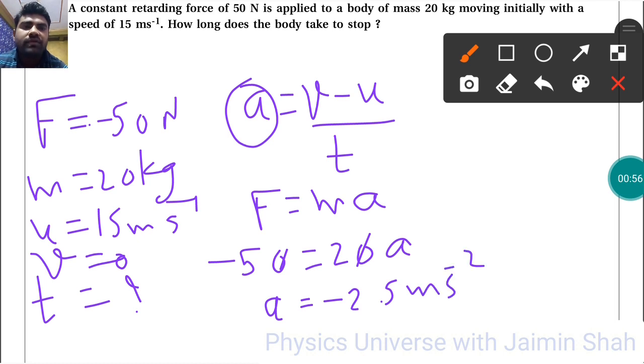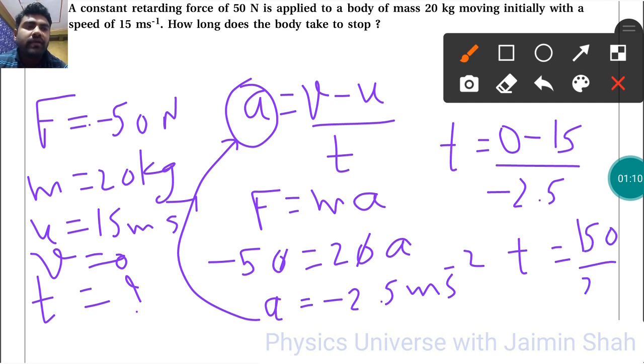Now put this acceleration formula here. So T is equal to V minus 0 minus 15 upon minus 2.5.